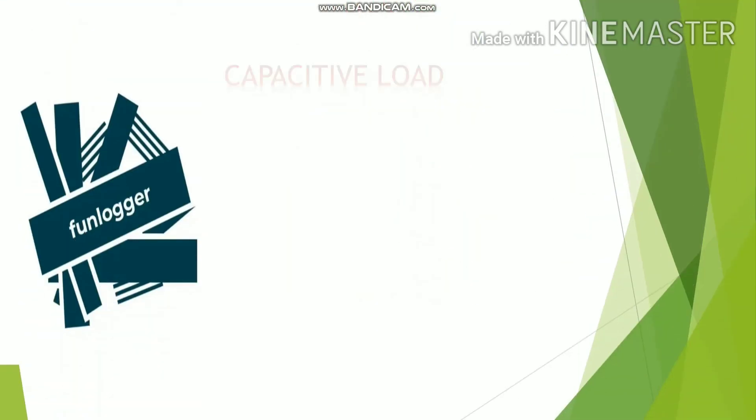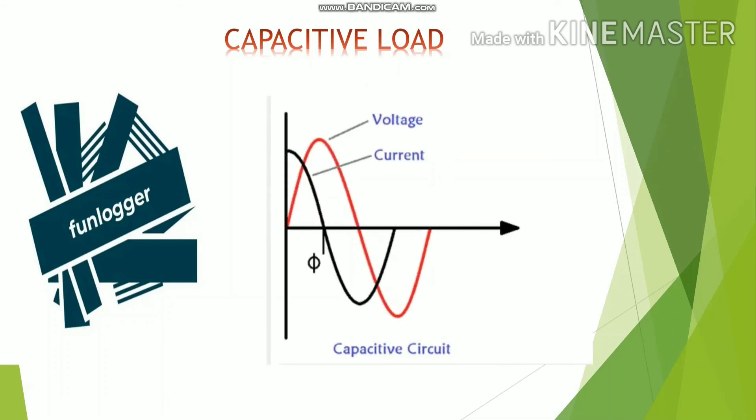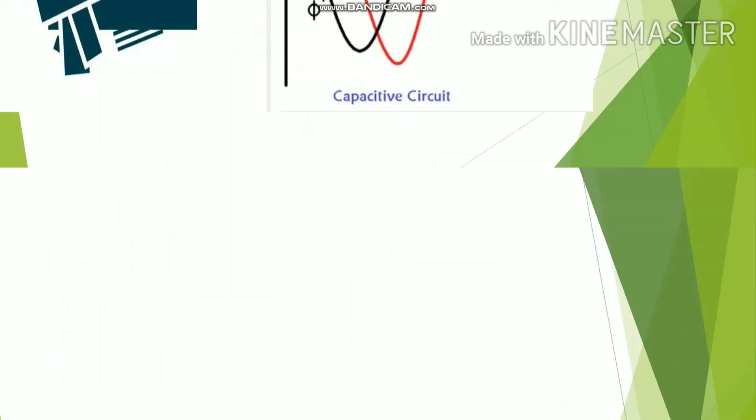The next one is capacitive load. Sometimes what happens is capacitive load gets increased while maintaining the inductive load at unity or near to unity, due to which current leads the voltage. This can be overcome by switching off one of the steps of the capacitor bank.